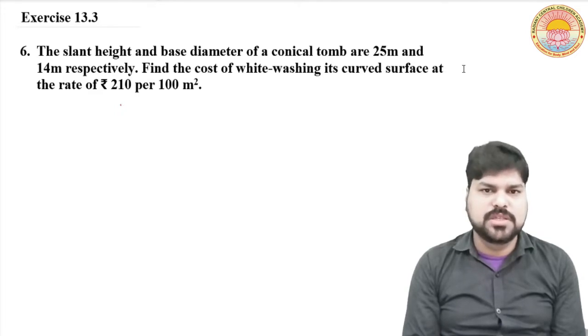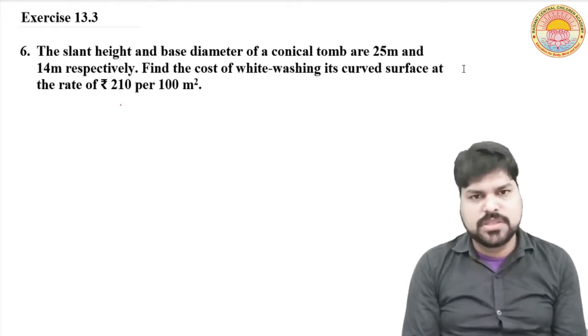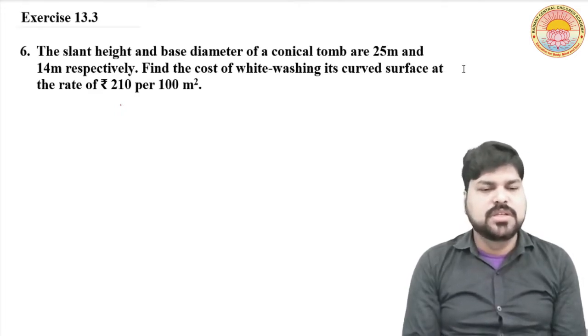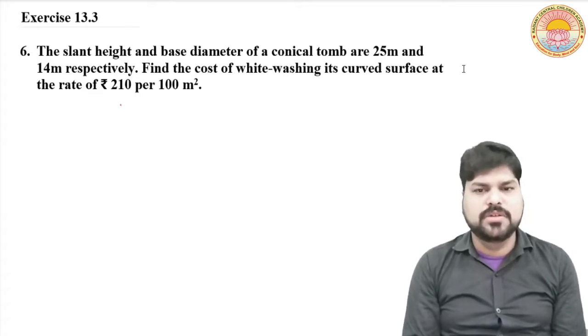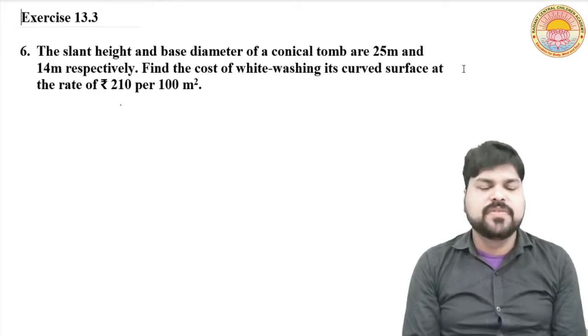So today is question number six in exercise 13.3. The slant height and base diameter of a conical tomb are 25 meter and 14 meter respectively. Find the cost of whitewashing its curved surface area at the rate of 210 rupees per 100 meter square.